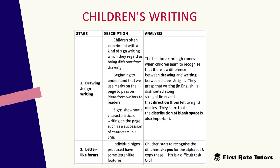These different stages can be summarised in a chart. On the left-hand side is the stage, in the centre is the description, and then there's a little bit of analysis. Stage one is drawing and sign writing. Children often experiment with a kind of sign writing which they regard as being different from drawing. They begin to understand that we use marks on the page to pass on ideas from writers to readers, and signs show some characteristics of writing on the page, such as a succession of characters in a line. The first breakthrough comes when children learn to recognise the difference between drawing and writing — between shapes and signs.